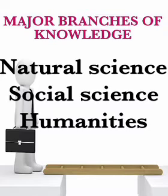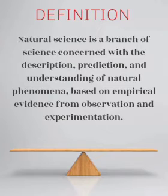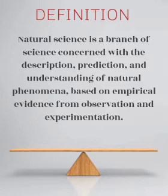Let's start. What is meant by natural science and how can we define it? Natural science is a branch of science concerned with the description, prediction and understanding of natural phenomena based on empirical evidence from observation and experimentation. Empirical evidence means the proved evidence by either our senses or other medias.